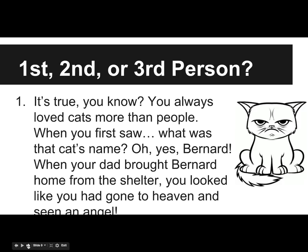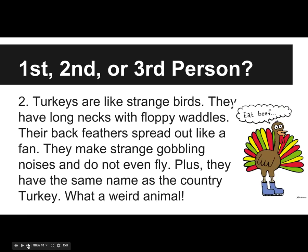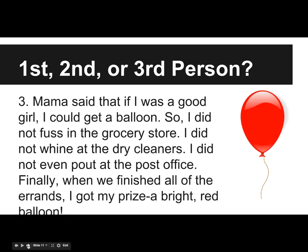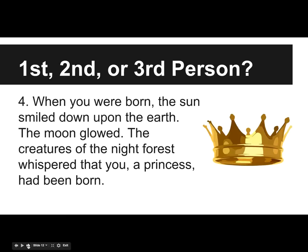Alright, now we're going to look at some examples. I want you to get a piece of paper — a plain piece of paper — and number it one through eight. You're going to go through this slideshow one at a time, read each slide, and write down whether you think it's first, second, or third person. I'll be walking around to check in with you as you go along. Remember to look for your key words. You can pause at each of the slides.